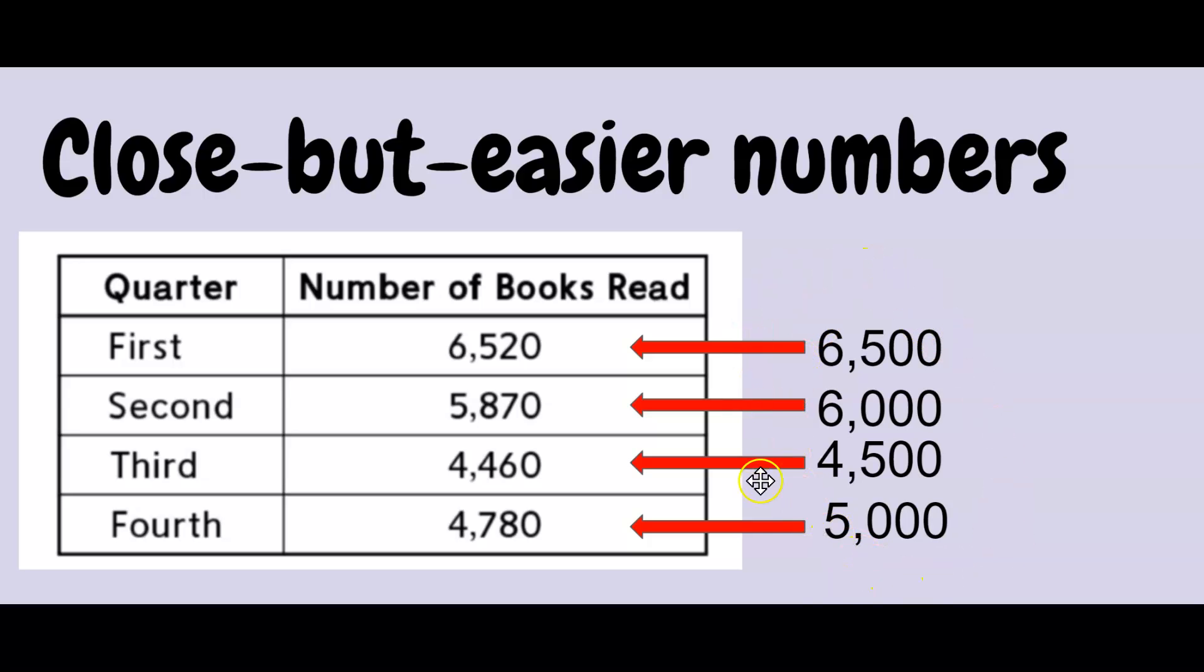Now, my close but easier numbers over here are much easier to work with. So when I add my thousands together, 6,000 plus 6,000 plus 4,000 plus 5,000.